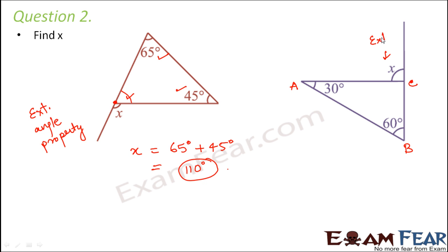So here also, we have triangle ABC. Again, when you look at X, X is an exterior angle because it is formed outside the triangle on the vertex with one arm as side of the triangle and the other arm as extended side. So here also we will use the same property. X will be equal to sum of opposite interior angles. So X would be 60 degrees plus 30 degrees, which is equal to 90 degrees.